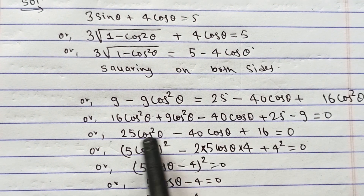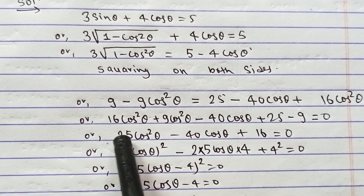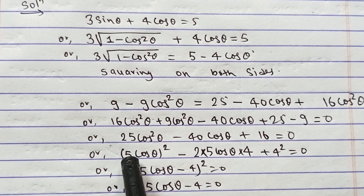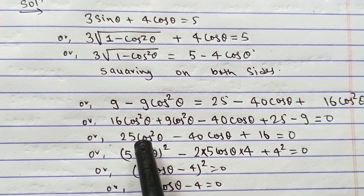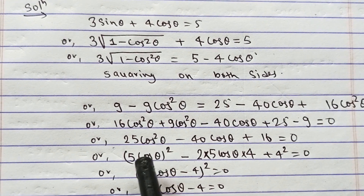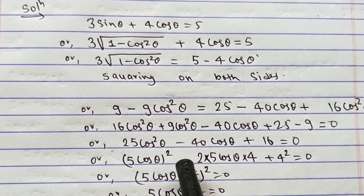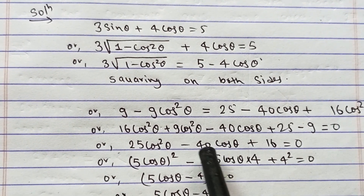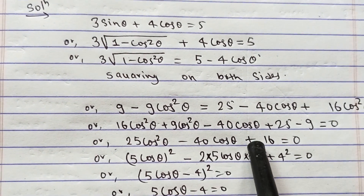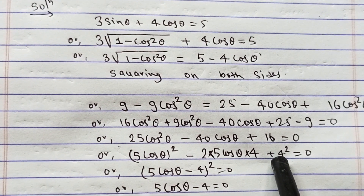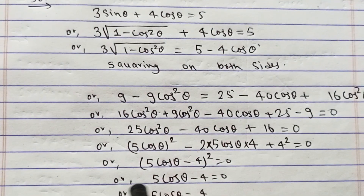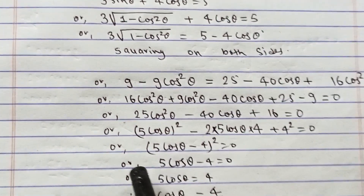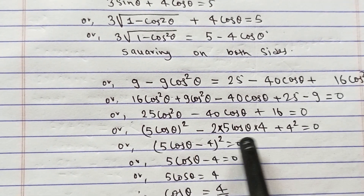25 - 9 = 16, and this can be rearranged into the (a - b)² form: 25 cos²θ - 40 cos θ + 16, which is written as (5 cos θ)² - 2×(5 cos θ)×4 + 4², applying the a² - 2ab + b² formula. This equals (5 cos θ - 4)².